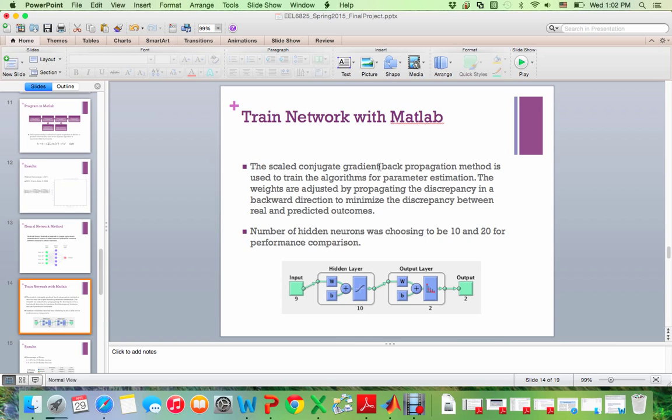The scale conjugate gradient back propagation method is used to train the algorithm for parameter estimation. The weights are adjusted in between each layers to actually reduce the discrepancy between the output and the input. The numbers of hidden neurons was chosen to be 10 and 20 for performance comparison. So right here I'm showing a flow chart for the 10 hidden layer neuron nodes. So the input has nine inputs. The hidden layers are chosen to be 10 layers. And the output layer is 2 because it's either malignant or benign. And then based on the probability of those two, you determine what the output is.